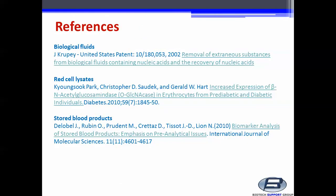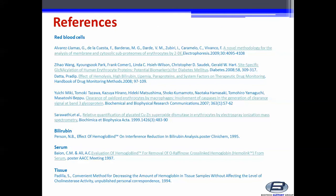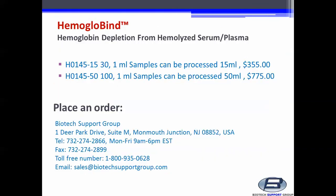Additional references on hemoglobin samples such as biological fluids, red cell lysates, stored blood products, red blood cells, bilirubin, serum, and tissue are found on biotechsupportgroup.com. To order, please visit biotechsupportgroup.com or contact sales at biotechsupportgroup.com. Thank you.